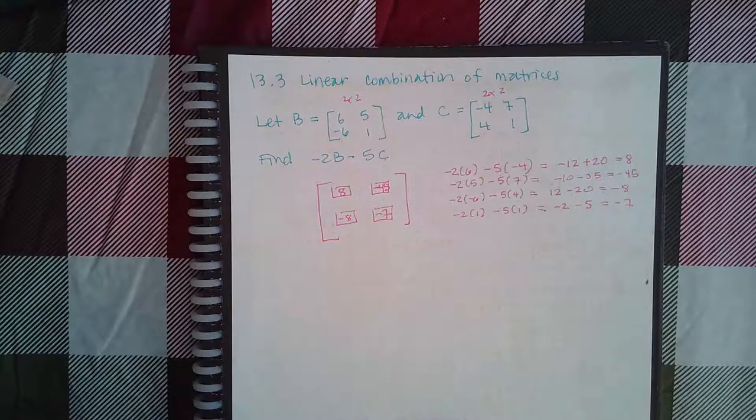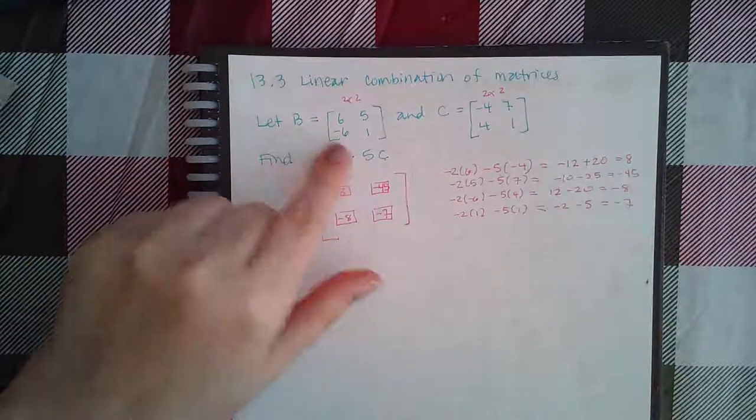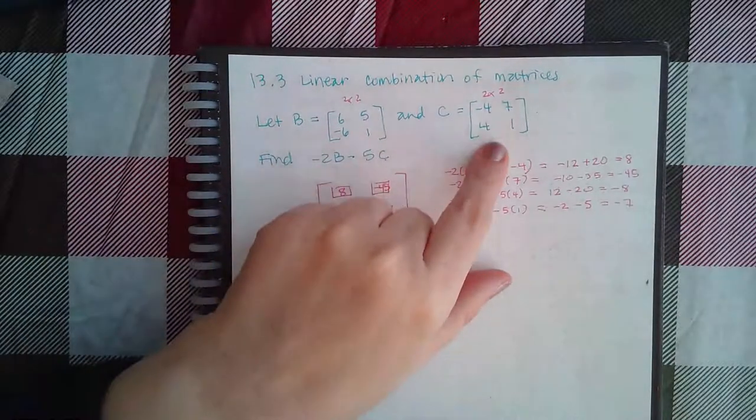So here we have 13.3 linear combination of matrices. We have B equal to this matrix, C equal to this matrix.